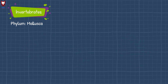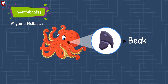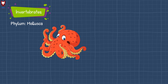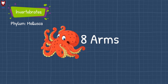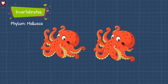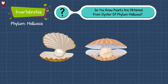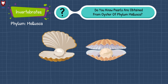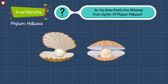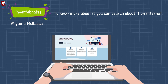Did you know that octopus has a beak like a parrot? Also, if their arms are cut, they can grow new ones. Pearls are obtained from the oyster of phylum Mollusca. To know more about it, you can search about it on the internet.